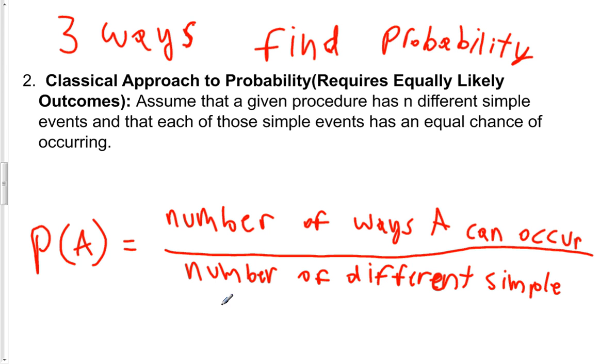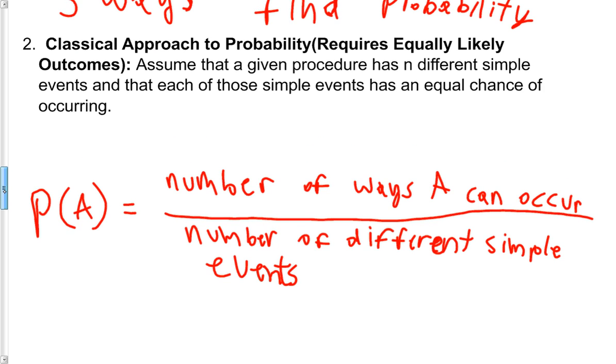And the number of different simple events is actually just the sample size, or the size of the sample space.